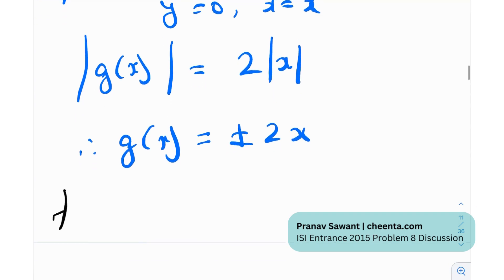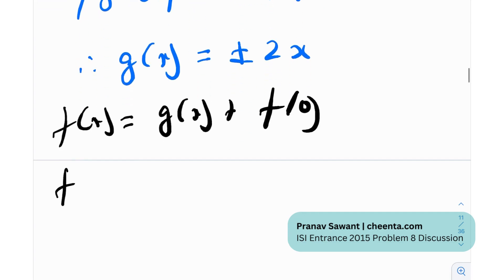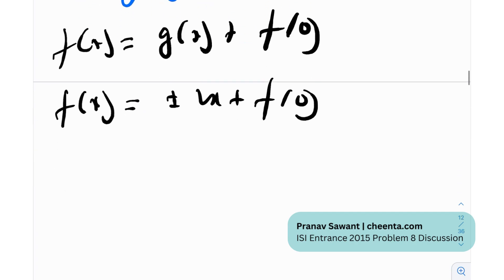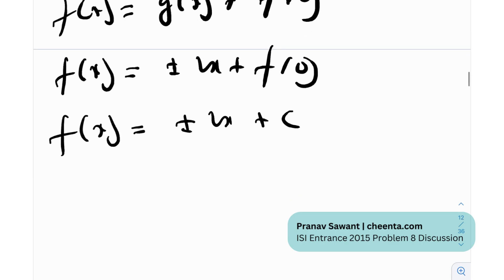Now what is f(x)? f(x) is g(x) plus f(0). So what will be f(x)? Plus or minus 2x plus f(0). And what is f(0)? f(0) is nothing but a constant. You plug in 0 into the function, you'll obviously get a constant value. So f(x) is equal to plus or minus 2x plus c. So f(x) can either be 2x plus c or it can be negative 2x plus c.